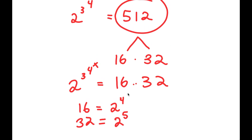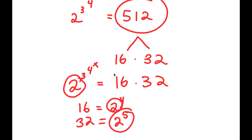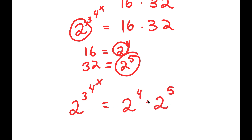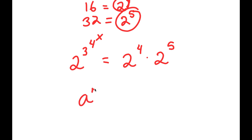So this is why we wrote 512 as 16 times 32, because now I have 2 to the power of 4 times 2 to the power of 5. Notice how we have another base of 2 over here. Now all my terms are bases of 2. If I have something in the form of a to the power of m times a to the power of n, this is equal to a to the power of m plus n.